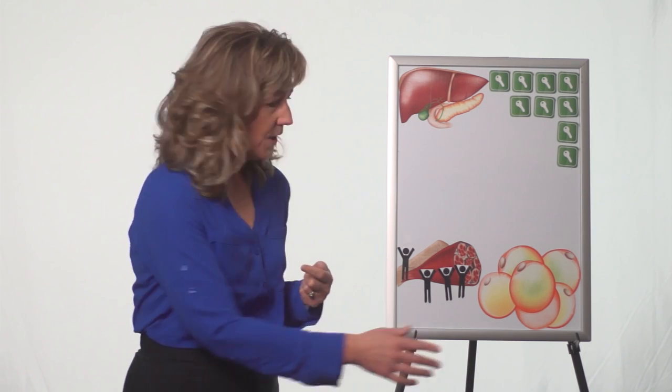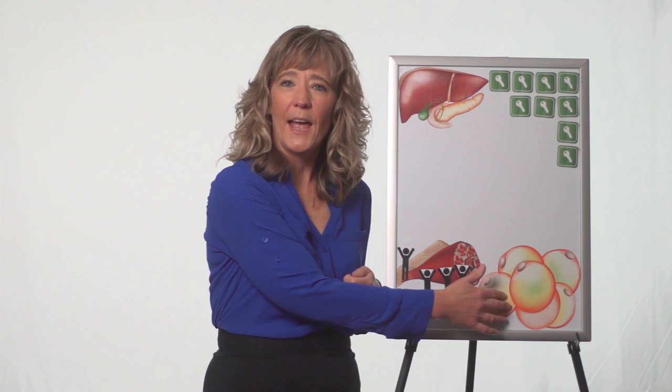But sometimes, actually oftentimes, this system doesn't work like it's supposed to. Over here, we have belly fat, also called central obesity. This is where all of those extra sugars get stored when we eat or drink too many of them.